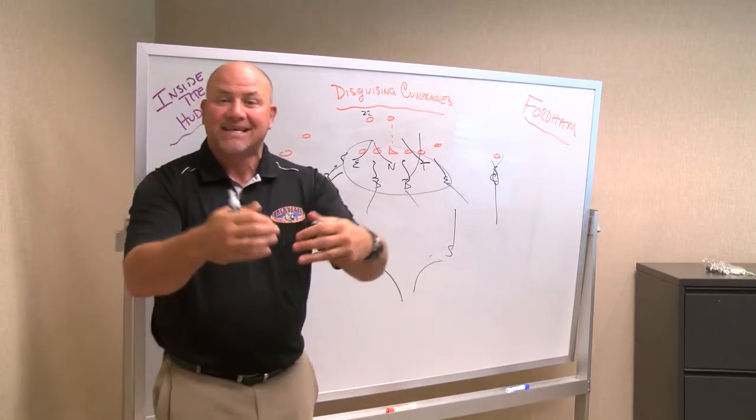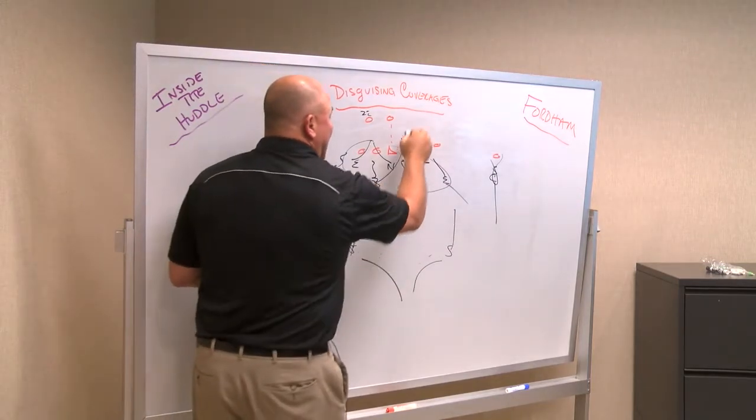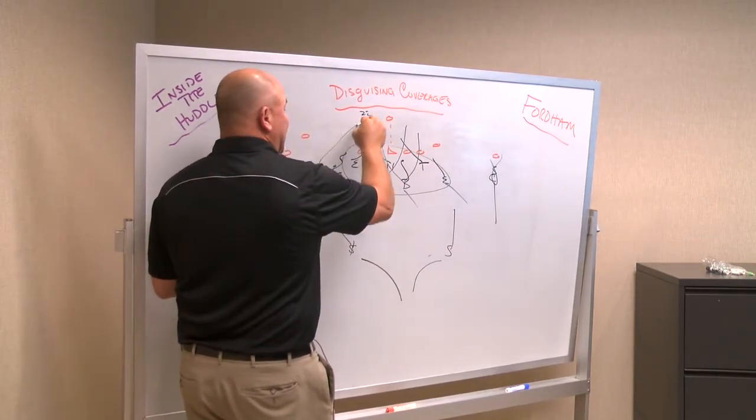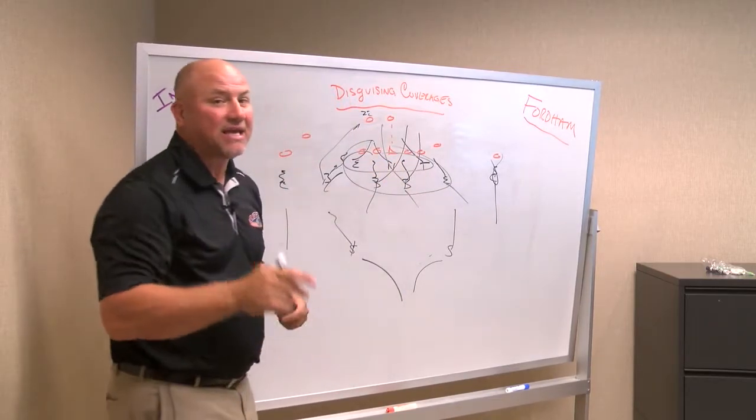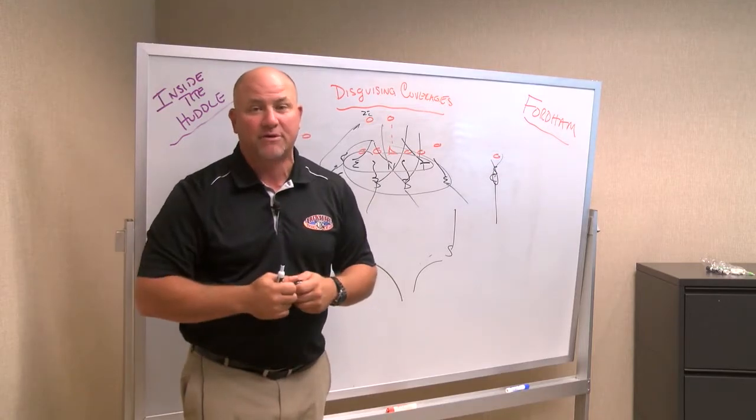So showing blitz, getting out, not showing blitz, and then bringing guys like Brandon Bryant, Michael Root, Jerry Poe off the corner. This defensive line was amazing last week. They're going to have to keep it up this week against Fordham at 3:30.